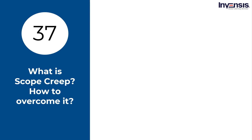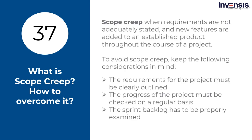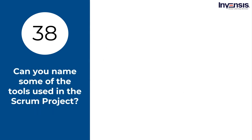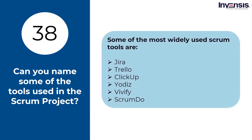What is scope creep and how to overcome it? Scope creep is when requirements are not properly stated and new features are added to an existing product in the course of a project. To avoid scope creep, the requirements for the project must be clearly outlined, the progress of the project should be checked regularly, and the sprint backlog has to be properly examined. Some of the most widely used Scrum tools are Jira, Trello, ClickUp, Yotas, Vivify, and ScrumDo.